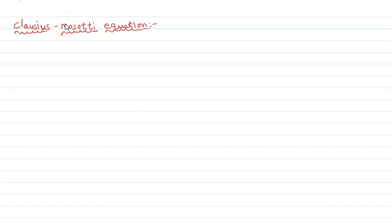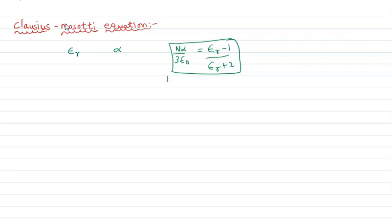Today our topic is the Clausius-Mossotti equation for dielectric materials. It is a very easy and important topic. The Clausius-Mossotti relation gives us a relationship between the dielectric constant, denoted epsilon-r, and the polarizability, denoted alpha. The final equation we are going to derive is: N alpha by 3 epsilon-0 equals epsilon-r minus 1 by epsilon-r plus 2.